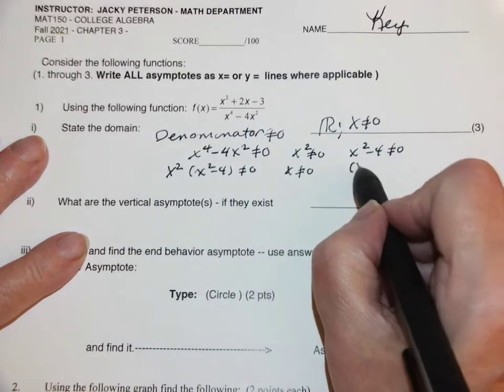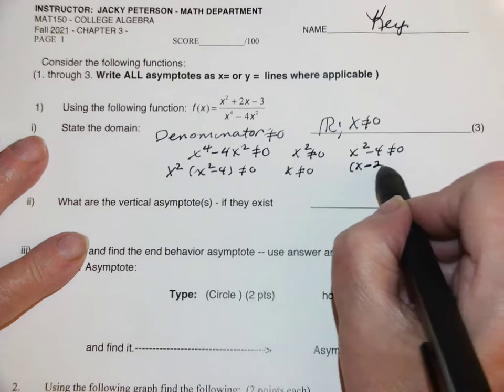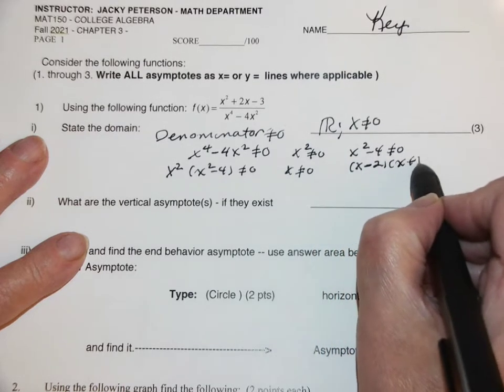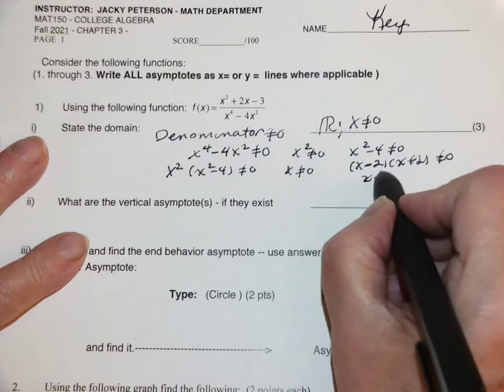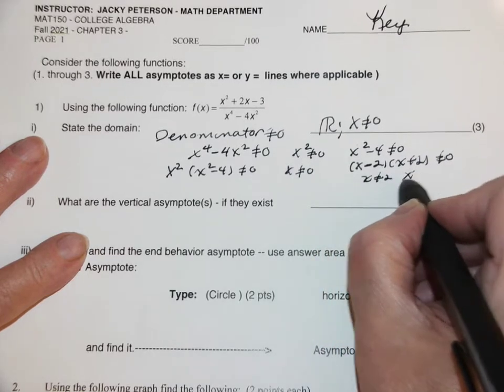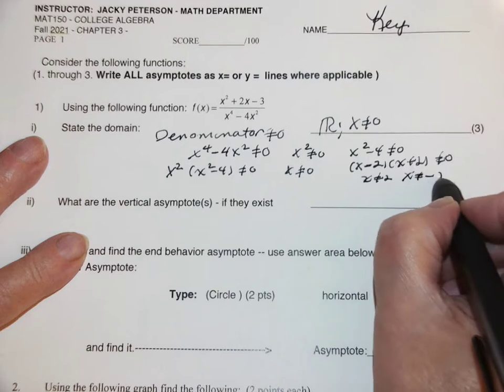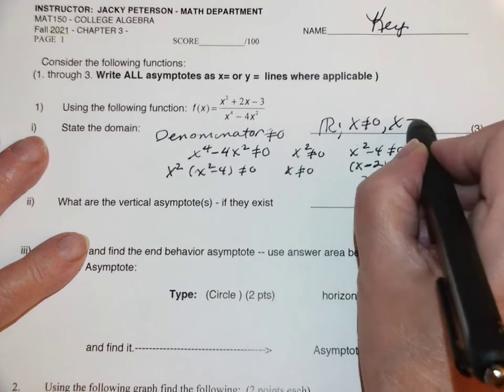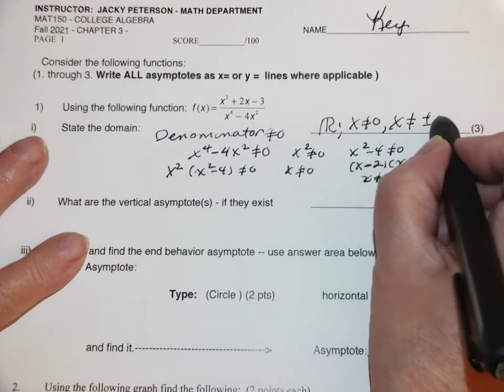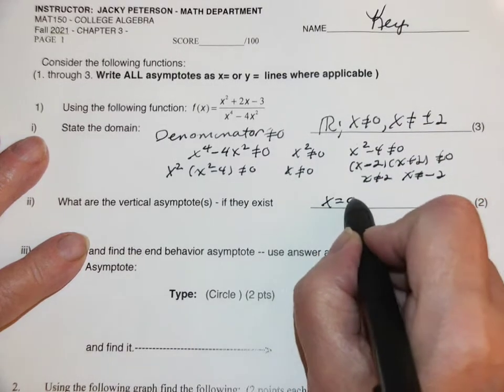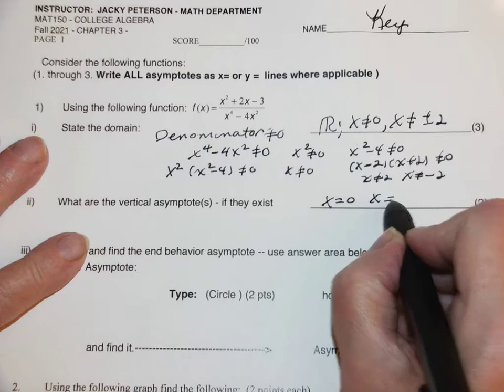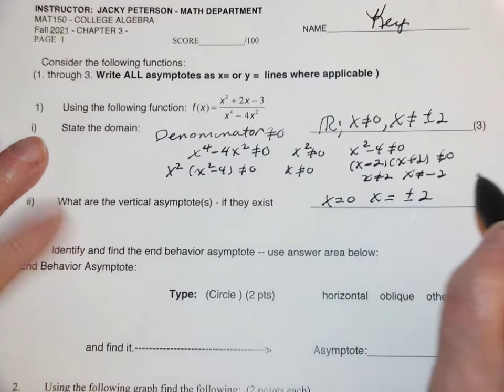And this is the difference of squares: x minus 2, x plus 2 can't be zero. So x can't be 2, x can't be negative 2. So x can't be plus or minus 2. Now, that means vertical asymptotes are x equals zero and x equals plus or minus 2. There are three.